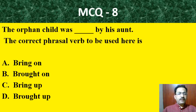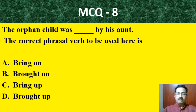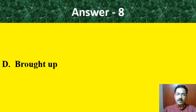Question number 8: 'The orphan child was — dash — by his aunt.' The correct phrasal verb to be used here is: bring on, brought on, bring up, or brought up. The correct phrasal verb here is 'brought up.' Don't forget to allot the marks if the answer is correct.